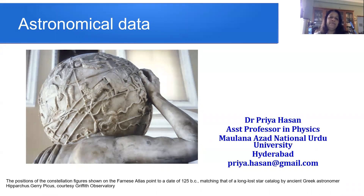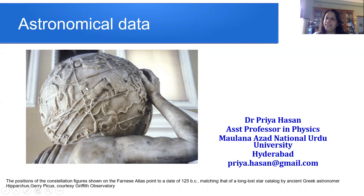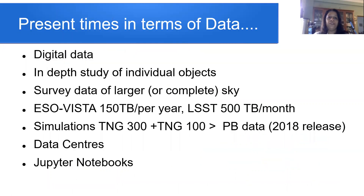What you see in this image is a globe where you actually have constellations marked. The positions of the constellations point to a date of about 125 BC, which actually matches the catalogue made by the Greek astronomer Hipparchus. Hipparchus was one of the earliest to catalogue data about stars — their positions and their brightness — in a very systematic manner. That's exactly what we call Astronomical Data: observing the sky and recording your data in an organized and usable form.